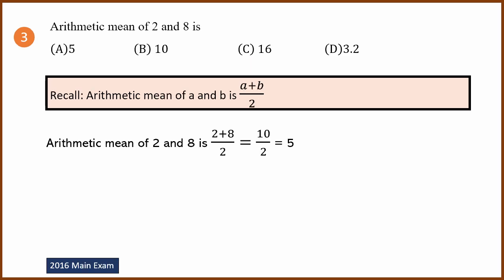Next question. This is an arithmetic mean question. Arithmetic mean is a plus b divided by 2. What is the arithmetic mean of 2 and 8? The answer is 2 plus 8 divided by 2, which is 10 by 2, equals 5.